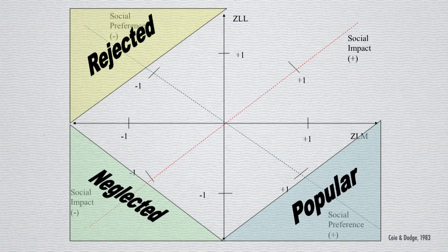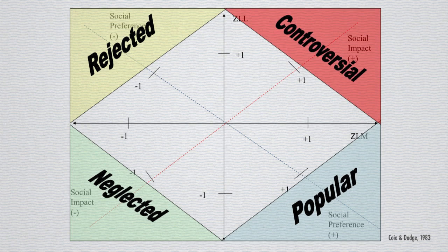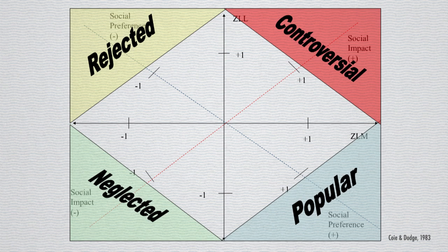Now their opposites are called the controversials. These kids are highly visible. Everyone knows that they're there, they get lots and lots of nominations, but what makes them controversial is that they get lots of nominations as being like the most, but they also get lots of nominations for being like the least. So they're kind of a love them or hate them kind of group of kids.